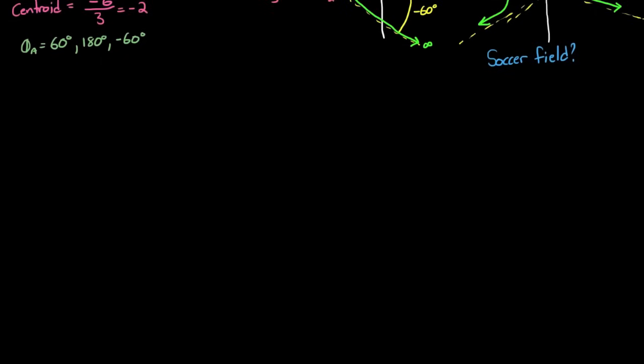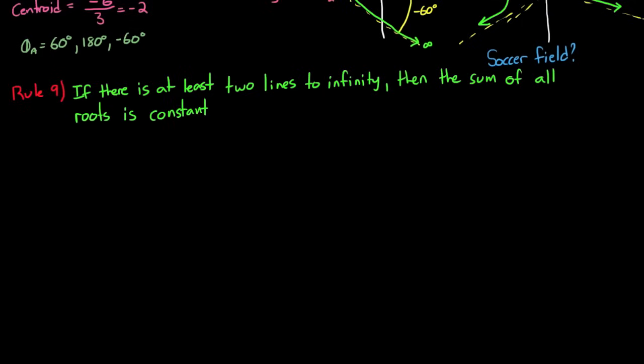Now I think that rule 9 here doesn't really help you to draw the root locus by hand, but what it does is it gives you an understanding of how the roots move relative to each other. It states that if at least two roots go or come from infinity, so there's at least two asymptotes that go to infinity, then the overall sum of the roots must be constant.